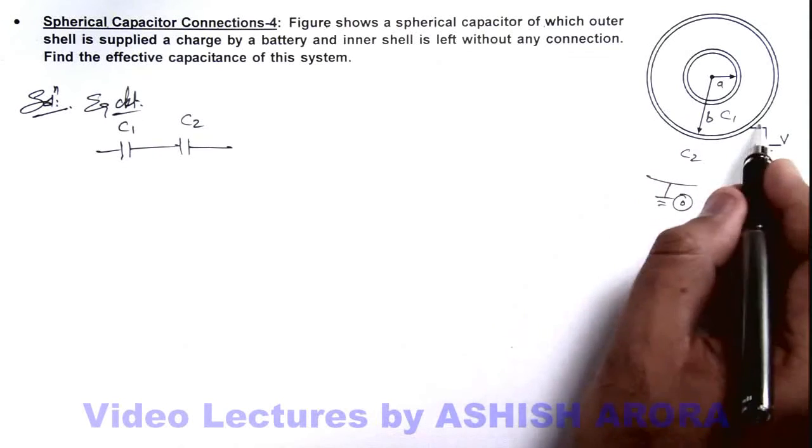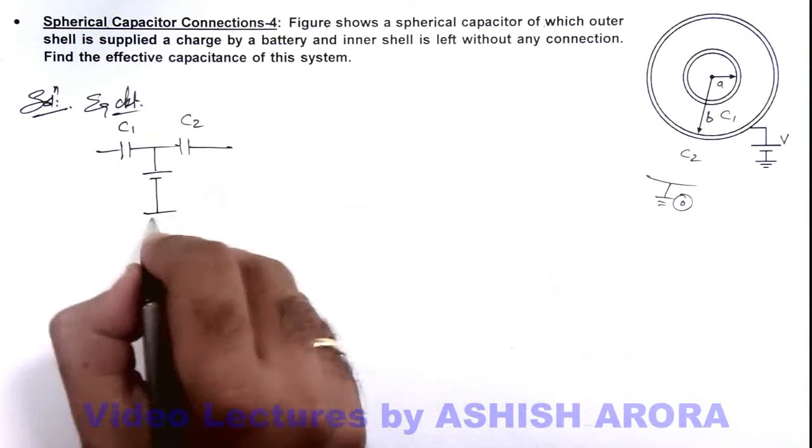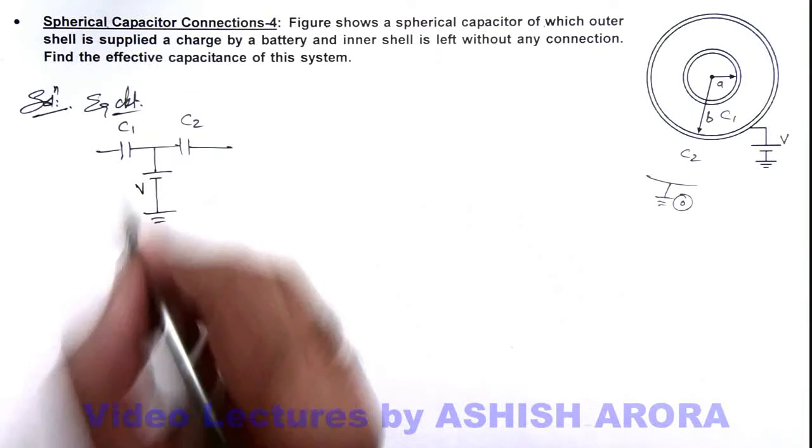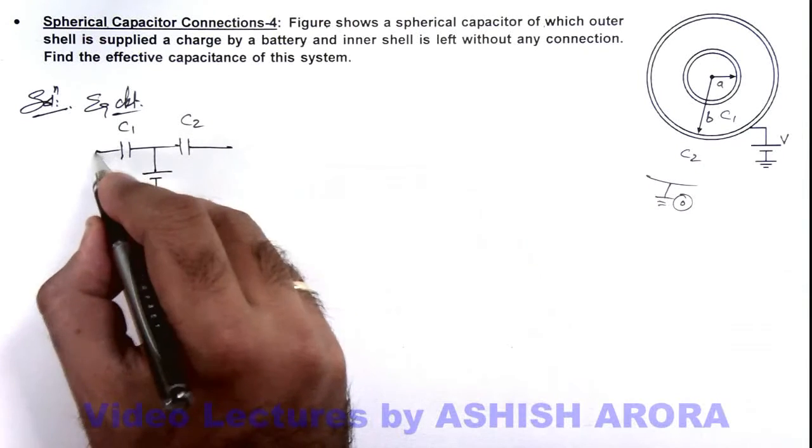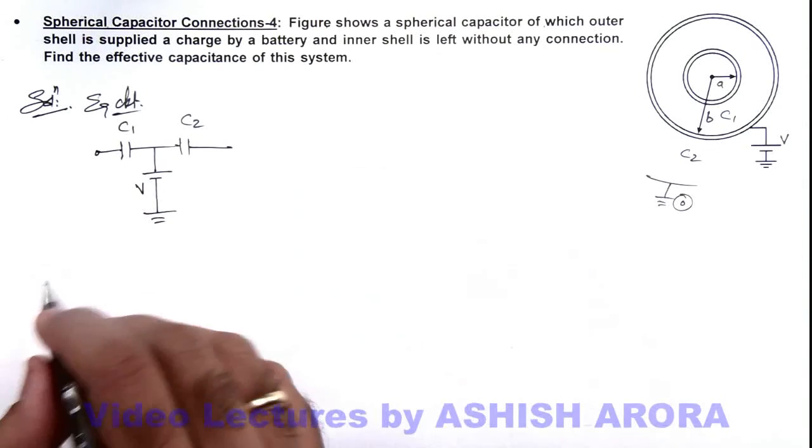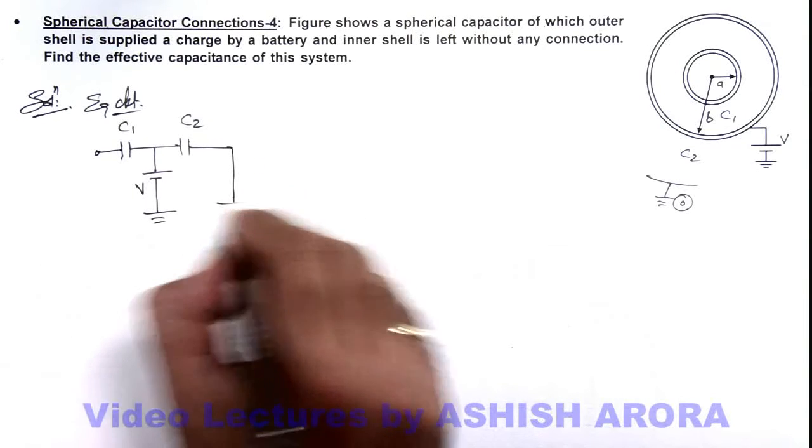The middle shell is connected to a battery, and then another terminal of the battery. The inner plate of C1 is left open, it is not connected anywhere, and the outer of C2 is connected to earth.